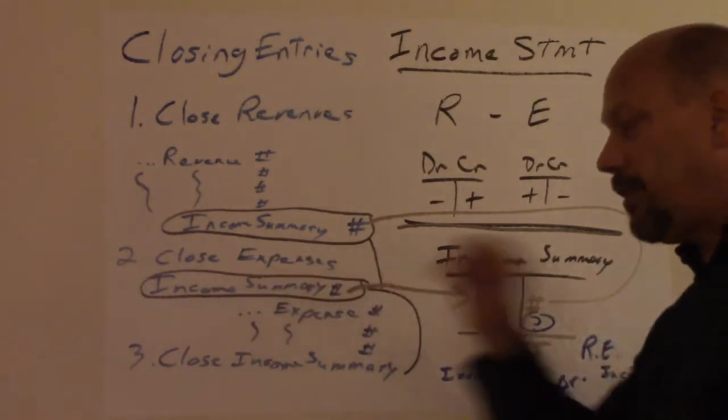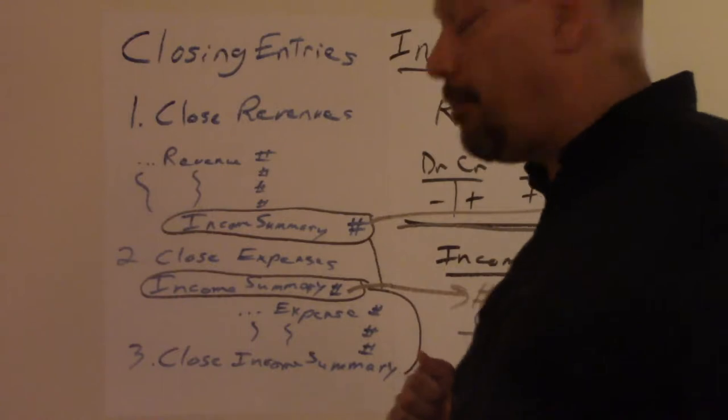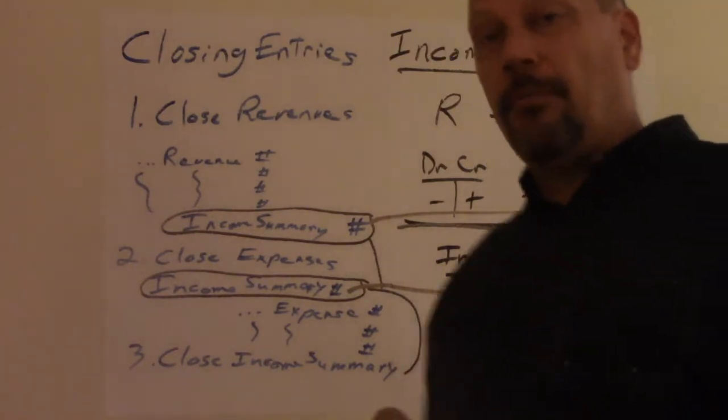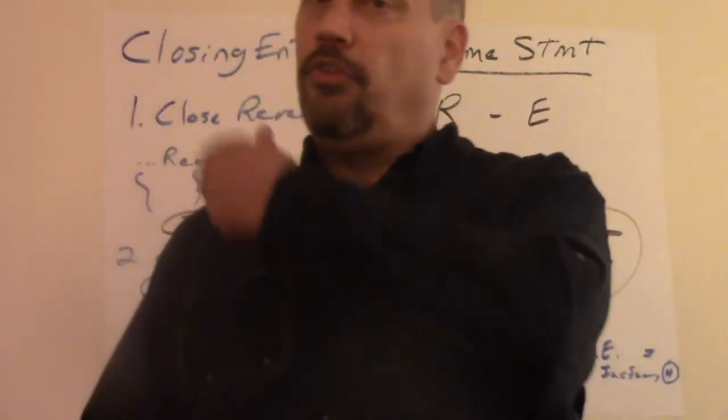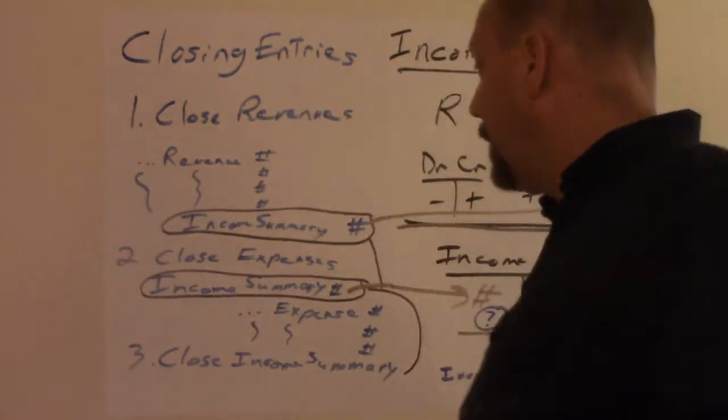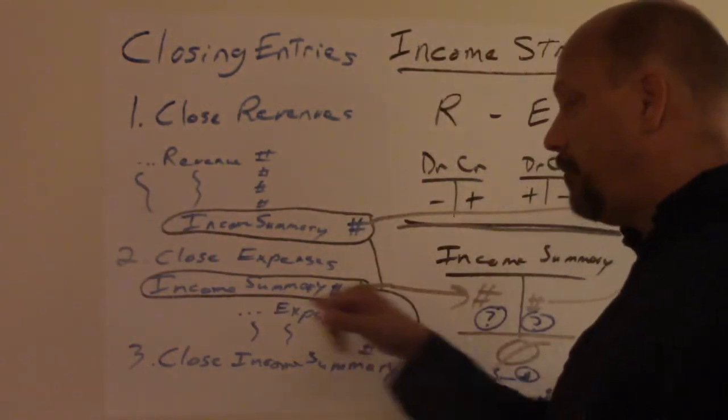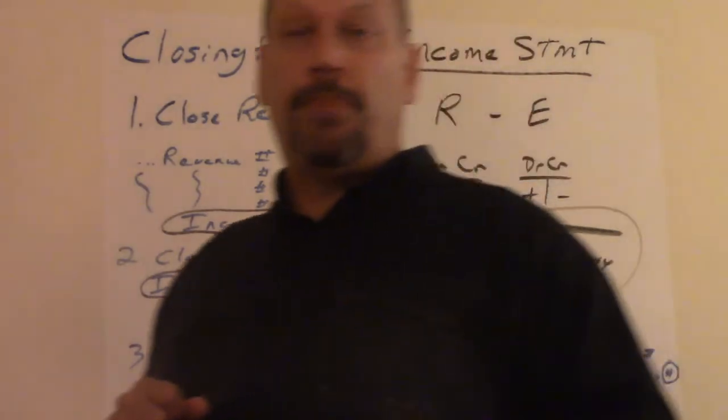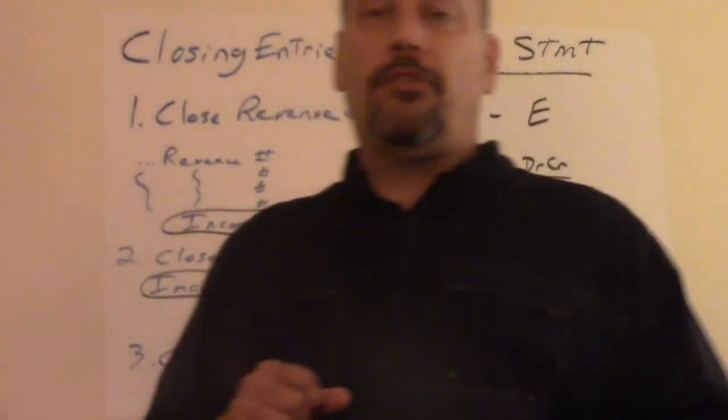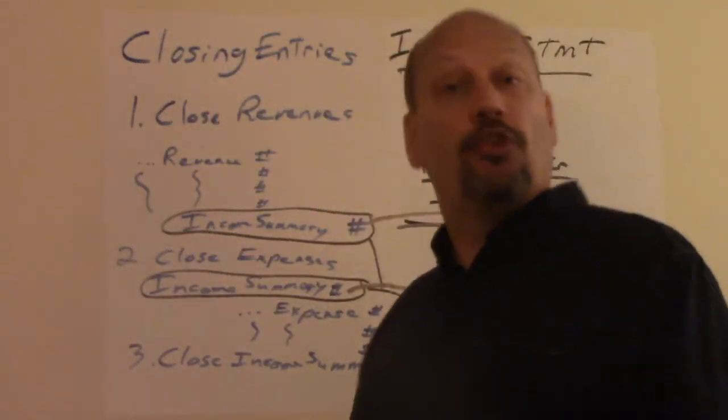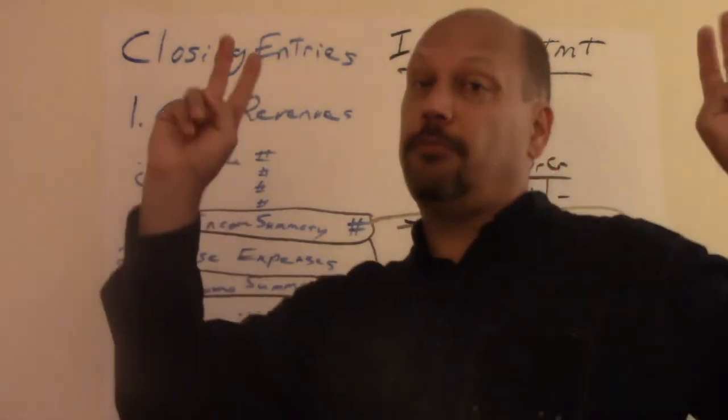So we debit income summary. That's what we're going to close them all to is the income summary. This income summary is open for about that long. Long enough for the journal entry and it's gone. So you add up all the expenses. This could have been utilities expense, rent expense, insurance expense, wage expense, salary expense, cost of goods sold. The only one that didn't have the expense in its name.